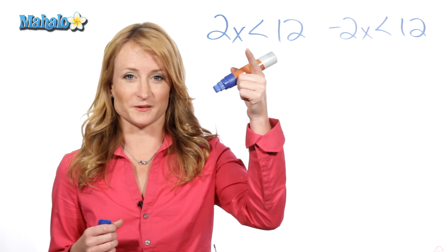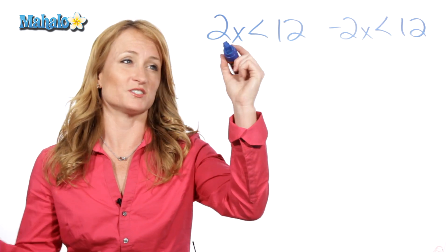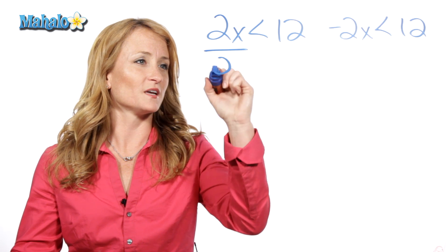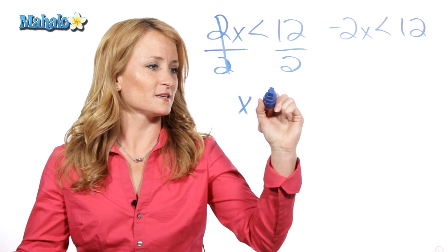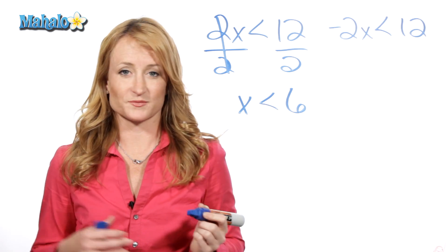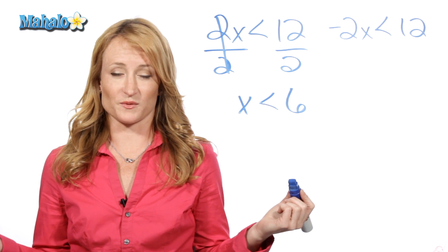If we were going to solve this problem here, we would divide by 2 on both sides, trying to get the variable by itself. So divide by 2, we're left with x is less than 6. Perfect. Didn't have to do anything with that inequality.